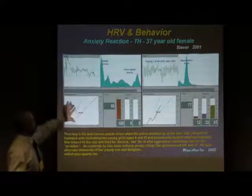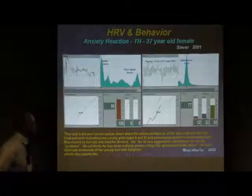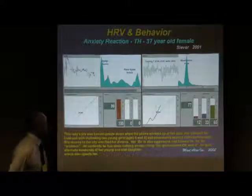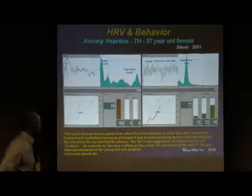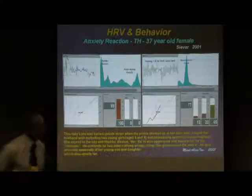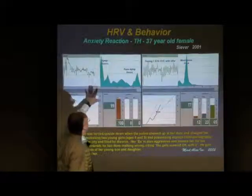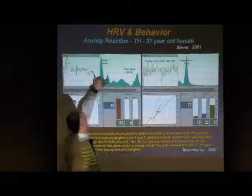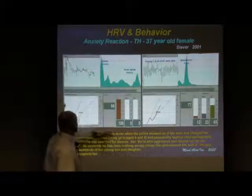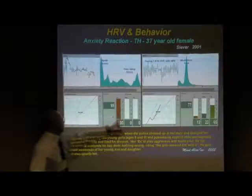Here is a good example of someone with a heart issue certainly based on cortex issues. This lady's life was turned upside down when police charged her husband with molesting two young girls ages six and eight, and he also had explicit child pornography. She moved to the city and filed for divorce. Her ex is aggressive and blames her for his problem. You can see all this spike-and-clamp activity in the freeze-frame graph, which is associated with high sympathetic activation — 99 beats per minute, with 100% coherence in the low band and no score at all otherwise.